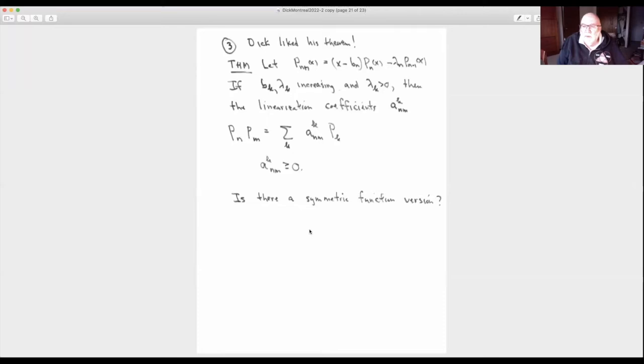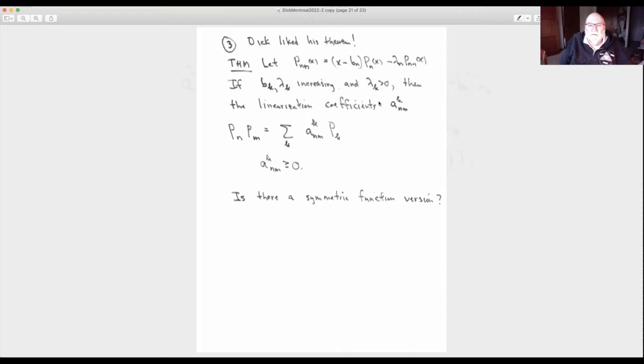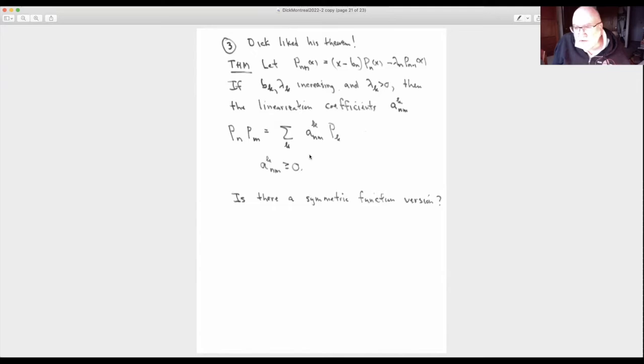Well, for the third and last remark, I wanted to show you a theorem that Dick had, his own theorem that he really liked. So he told me this theorem, said he really liked this theorem. It has to do with linearization of polynomials. Suppose I want to take a product of two polynomials and expand in terms of polynomials. I get some coefficients. The theorem said, if the three-term recurrence coefficients are increasing lambda positive, well, lambda positive, you need for positive definite in this. Then these linearization coefficients are positive.